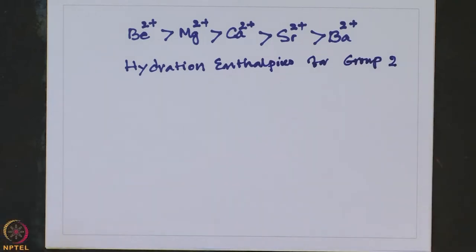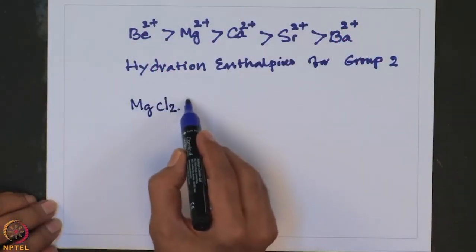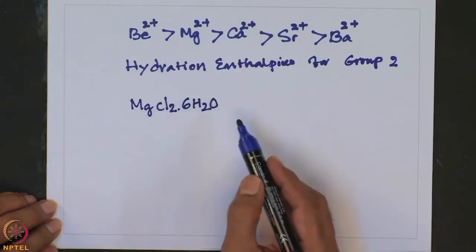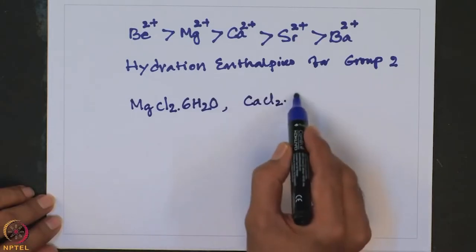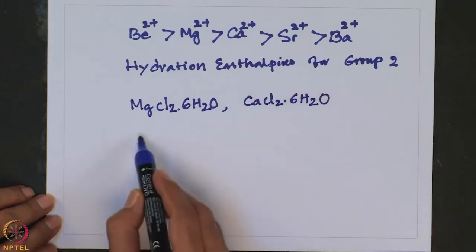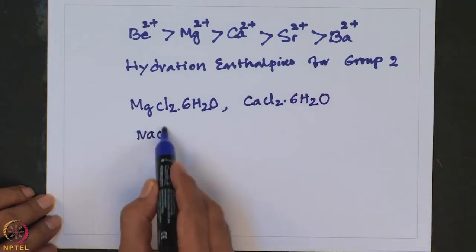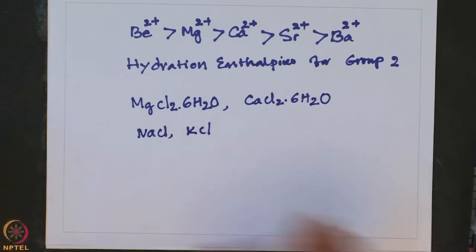Due to their larger charge-to-size ratio, group 2 elements are more extensively hydrated compared to group 1 elements. For example, magnesium chloride forms MgCl2·6H2O with 6 water molecules, and calcium chloride can also take up to 6 water molecules. In comparison, sodium chloride and potassium chloride do not form hydrates — that is the key difference between group 1 and group 2 elements.